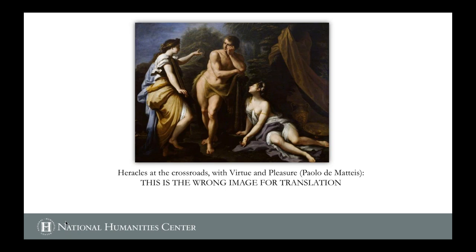Wilson introduces a slide showing Heracles at the Crossroads as the wrong image for thinking about translation. A very common misconception — including among students — is that there's a binary choice: either you choose the pleasurable but false, untruthful translation, or you take the virtuous but almost unreadable literal path up the mountain. Many people have this idea that a literal translation is somehow more truthful, while a fun poetic translation is somehow vicious or dishonest. Wilson argues this is not a good way of approaching either the humanities in general or literary texts in particular.